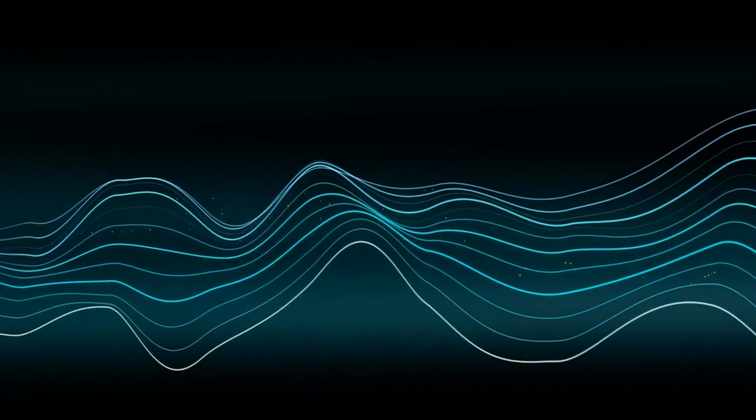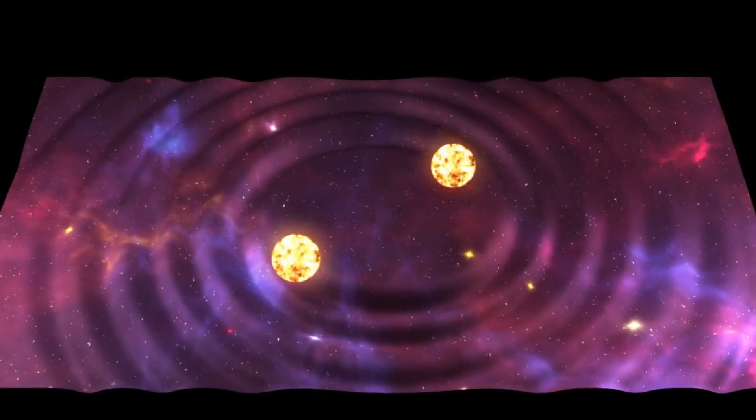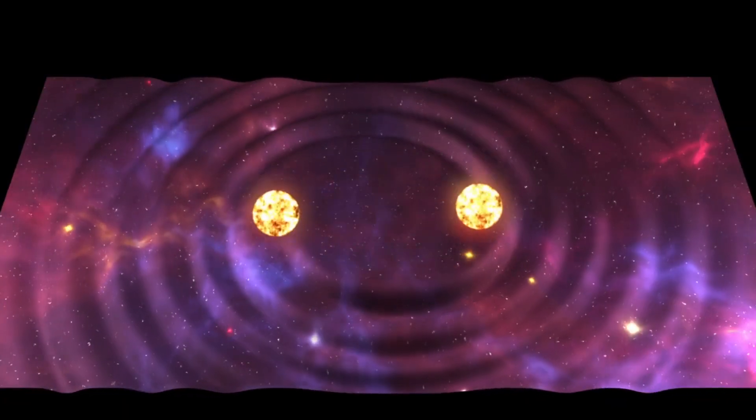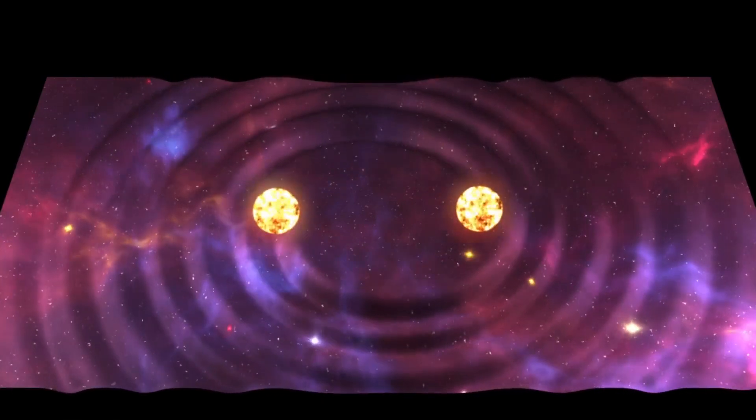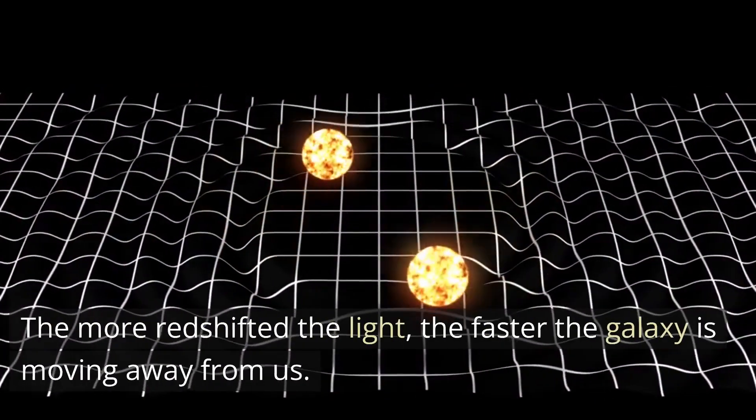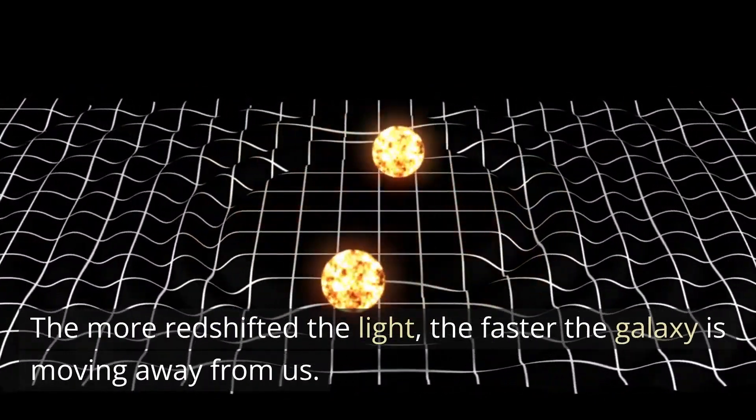In the case of galaxies, light acts as the wave. As a galaxy moves away from us, the light waves it emits stretch out, increasing their wavelength and shifting them towards the red end of the spectrum. This is why we call it redshift. The more redshifted the light, the faster the galaxy is moving away from us.